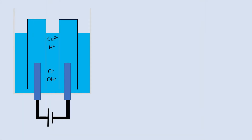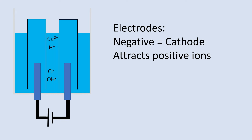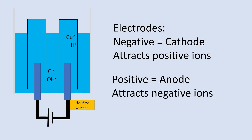Now we have the electrolysis running. We have two electrodes: the negative electrode called the cathode, which attracts the positive ions — we can see that happening here — and the positive electrode called the anode, which attracts the negative ions, and we can see them moving here.